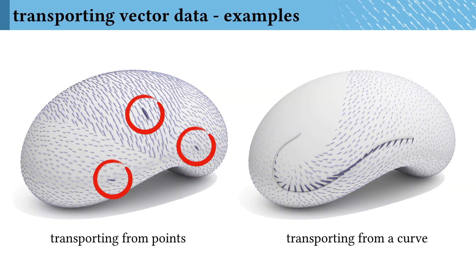Here are some examples of applying this scheme on curved surfaces. On the left, we parallel transport vectors from three points circled in red. And on the right, we transport vectors defined along a curve.